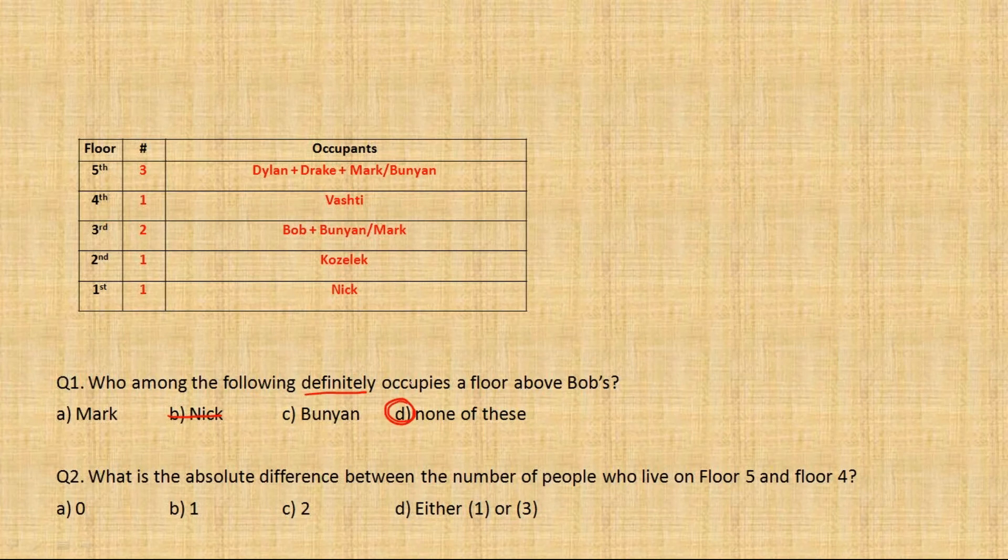Second question. What is the absolute difference between the number of people who live on floor 5 and floor 4? So floor 5 and 4, there are 3 and 1 people. So the absolute difference is 2, which is 3rd option.